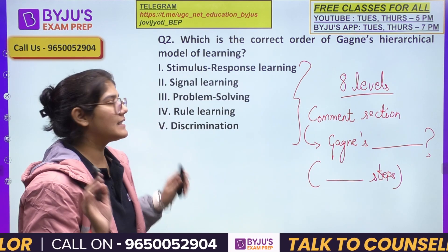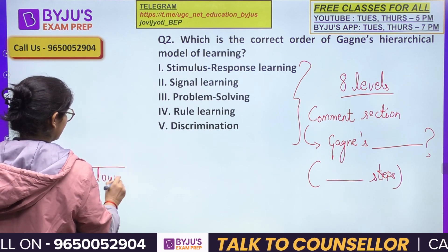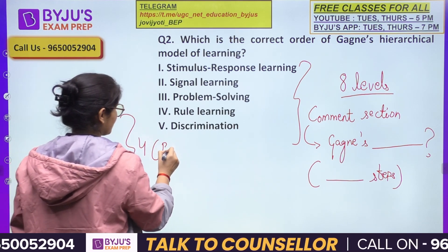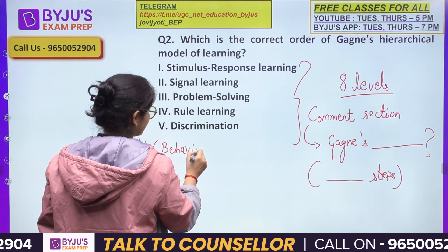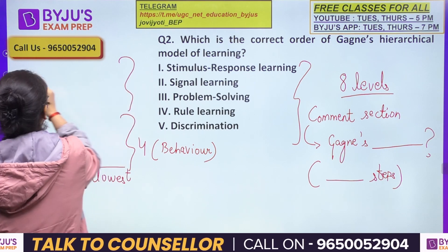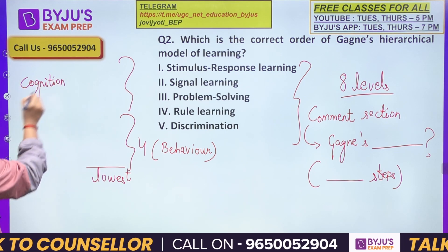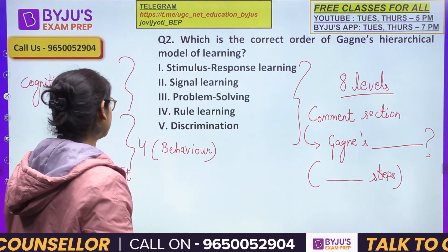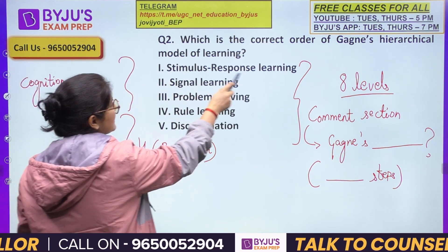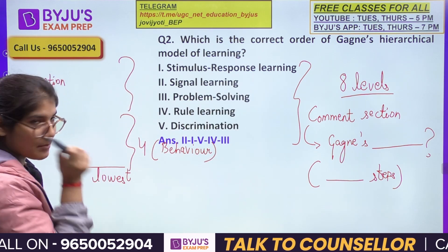In this model with eight levels of learning, we start from the lowest — behavioral or signal-based needs — moving up through stimulus-response learning, then discrimination, rule learning, problem solving, and up to cognition-level needs. The levels include: signal learning, stimulus-response learning, discrimination, and the highest level — problem solving.